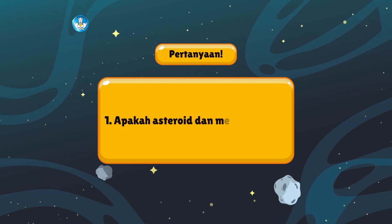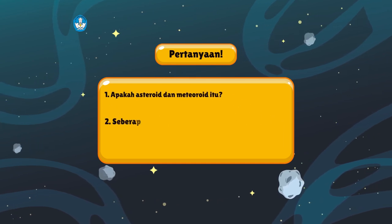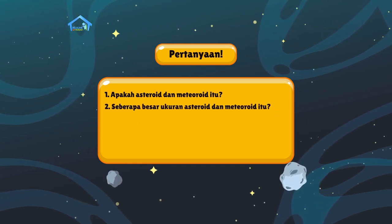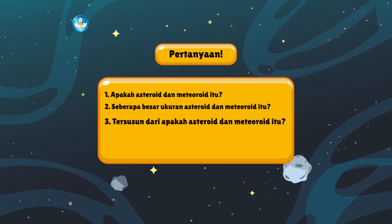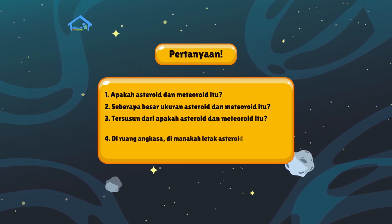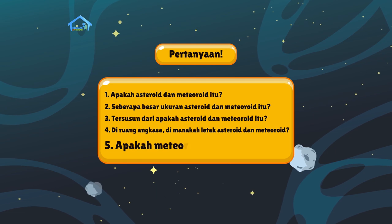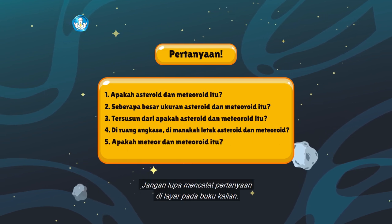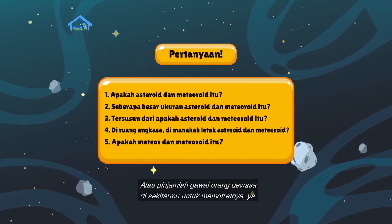Pertanyaan pertama: apakah asteroid dan meteoroid itu? Lalu, seberapa besar ukuran asteroid dan meteoroid itu? Ketiga, tersusun dari apakah asteroid dan meteoroid itu? Keempat, di ruang angkasa, di manakah letak asteroid dan meteoroid? Terakhir, apakah meteor dan meteoroid itu? Jangan lupa mencatat pertanyaan di layar pada buku kalian, atau pinjam gawai orang dewasa di sekitarmu untuk memotretnya ya. Selamat menulis!